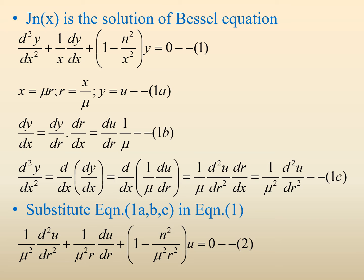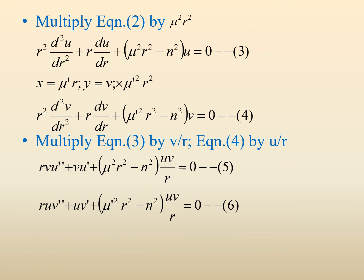Substituting into equation 1 gives (1/μ²)(d²u/dr²) + (1/μ²r)(du/dr) + (1 − n²/μ²r²)u = 0. Multiplying through by μ²r² gives r²(d²u/dr²) + r(du/dr) + (μ²r² − n²)u = 0.